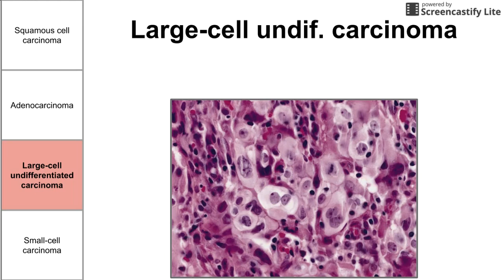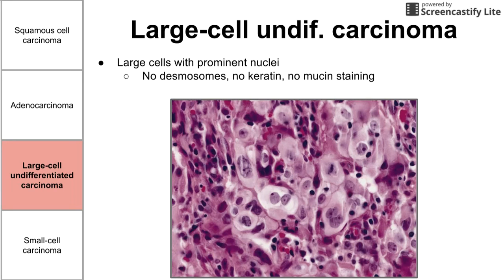Next, we have large cell undifferentiated carcinoma. Not much to know about this one — it's usually a miscellaneous category for the non-small cell carcinomas. The cells do have prominent nuclei and are pretty big. You do not see desmosomes or keratin here, as those would be characteristic of squamous cell carcinoma. You do not see mucin staining, as that would be characteristic of adenocarcinoma. It is possible to characterize large cell undifferentiated carcinoma based on the genetics using a cDNA microarray, though we won't go into that detail here.